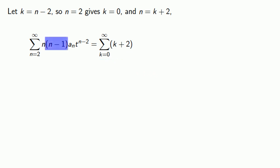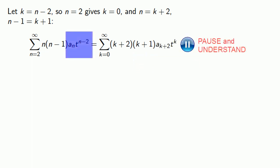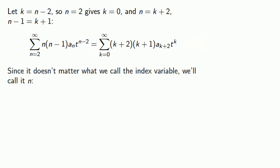The other factor, n minus 1, is equal to k plus 1. Then, filling in the rest of our terms, since it doesn't matter what we call the index variable, we'll call it n. And this gives us the series.